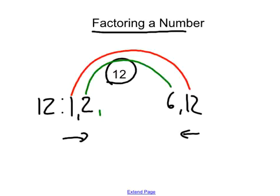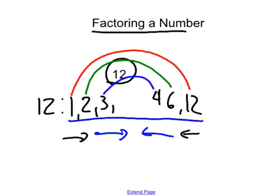Can I multiply 3 times a number to give me 12? 3 times 4 is 12. I want you to notice that what happened here is that I met myself in the middle. There's nothing between 3 and 4 except for decimals, so that's where I'm going to end. These are all of the factors of 12.